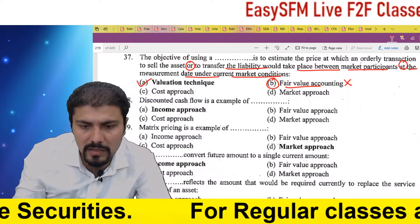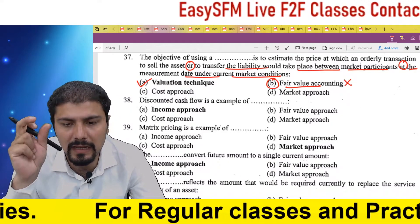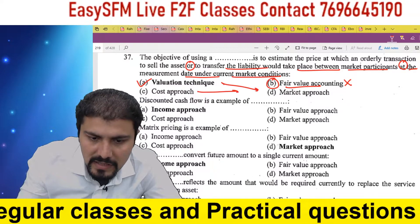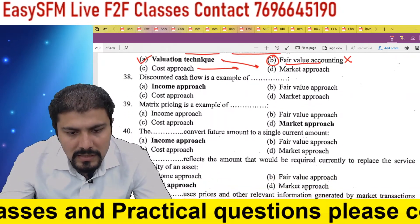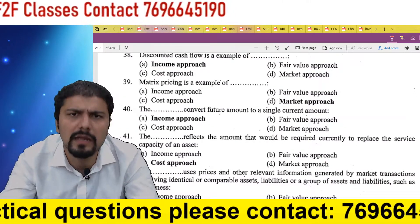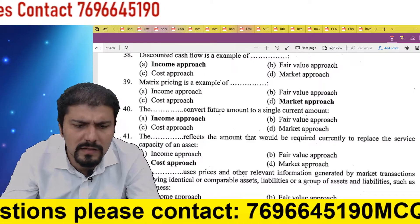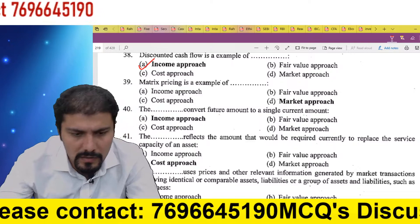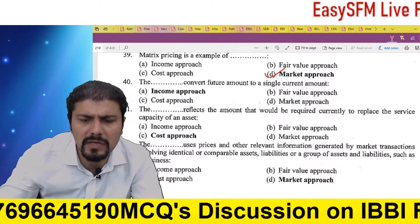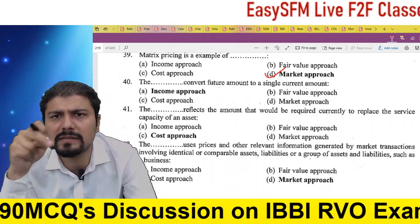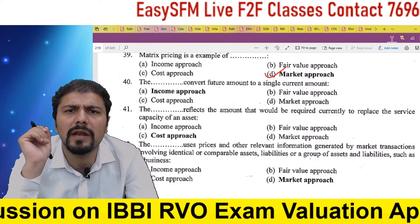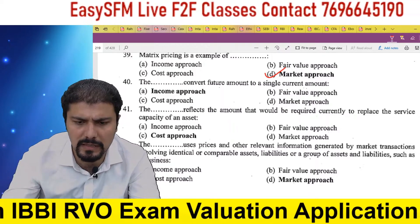Cost approach is not a standalone objective, nor is market approach — the valuation technique helps us, and its sub-parts are income approach, market approach, and cost approach. Discounted cash flow technique: future cash flows, derive their present value today — that is the income approach. Matrix pricing is an example of the market approach — in matrix pricing, prices from multiple similar instruments are used to estimate the price, based on rates at which they trade in the market.